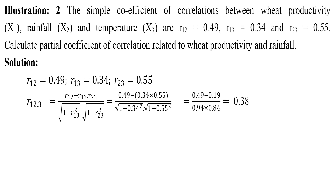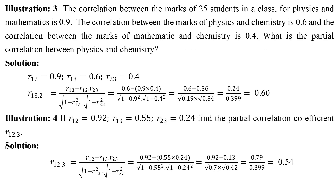Illustration 2: The simple coefficients of correlations between wheat productivity x1, rainfall x2, and temperature x3 are r12 = 0.49, r13 = 0.34, and r23 = 0.55. Calculate the partial coefficient of correlation related to wheat productivity and rainfall. Illustration 3: The correlation between the marks of 25 students in physics and mathematics is 0.9, between physics and chemistry is 0.6, and between mathematics and chemistry is 0.4. What is the partial correlation between physics and chemistry?